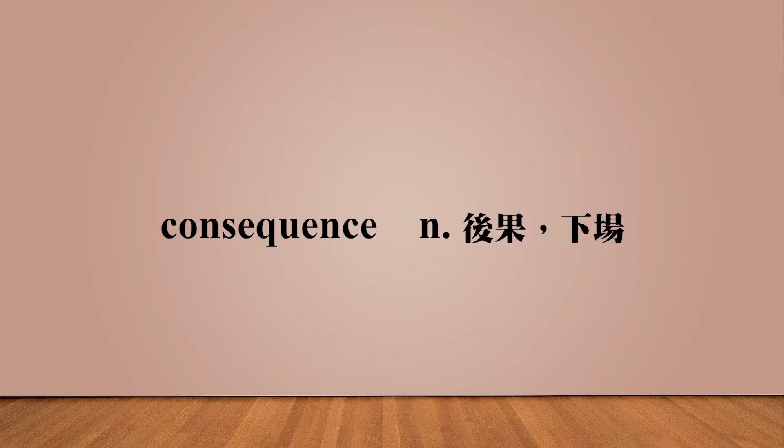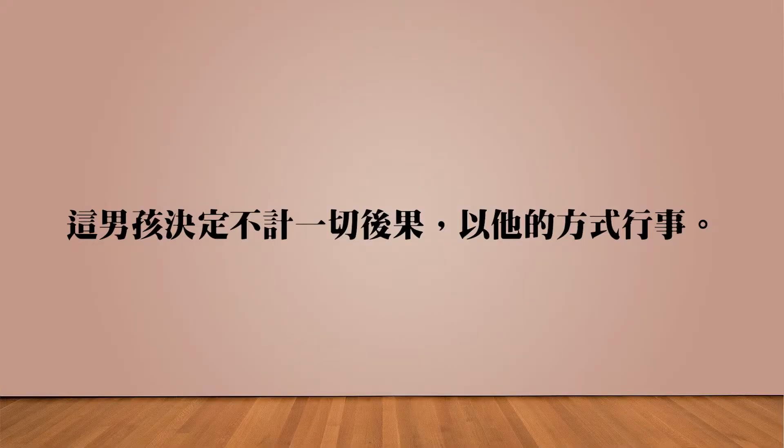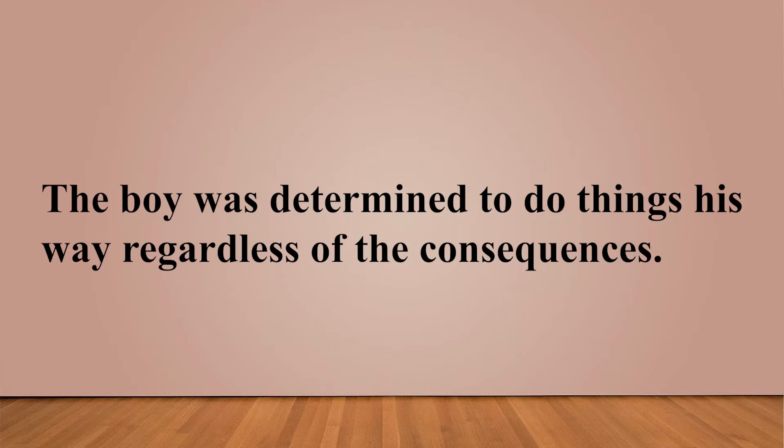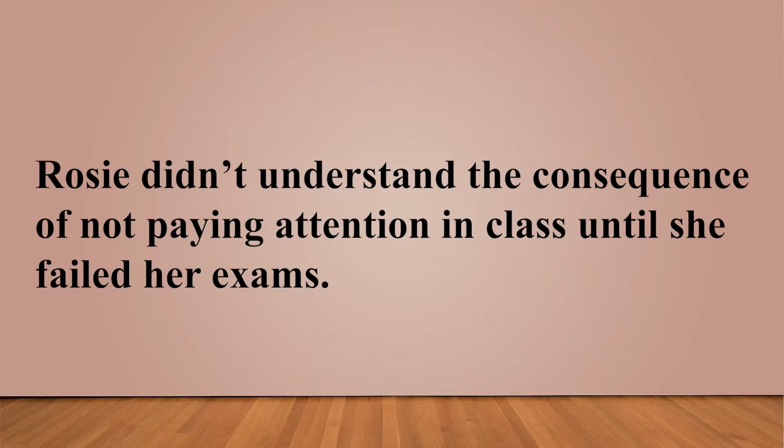第二个字词是「后果、下场」：consequence。例如：The boy was determined to do things his way regardless of the consequences. Consequence 和 result 的差别在于，consequence 多半带有一点威胁性，指不好的下场。「There will be consequences」就是警告对方后果自负的意思。Regardless of 表示不管后面这件事情。